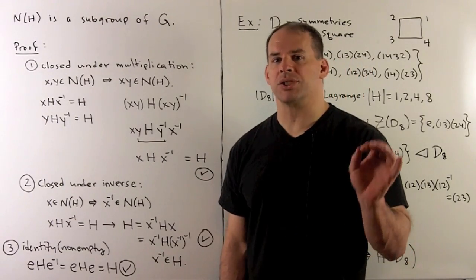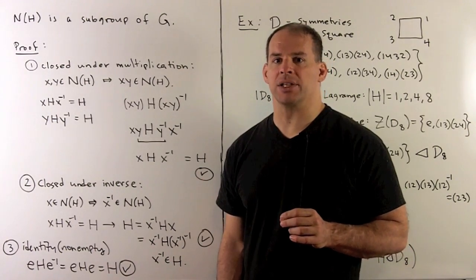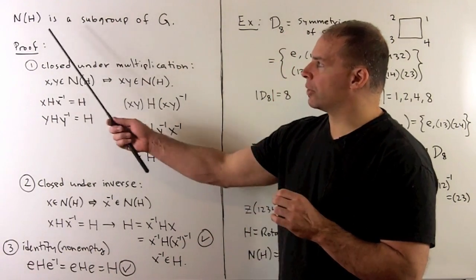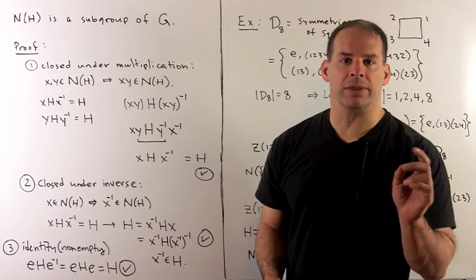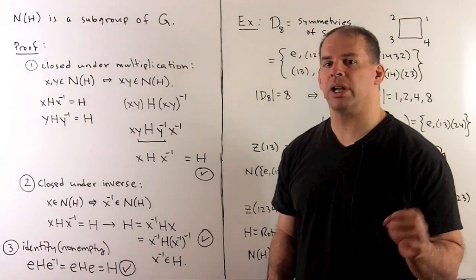Let's show that the normalizer is a subgroup of G. We'll leave the centralizer as an exercise. To show we have a subgroup, we need to show three things: closed under multiplication, closed under inversion, and non-empty.